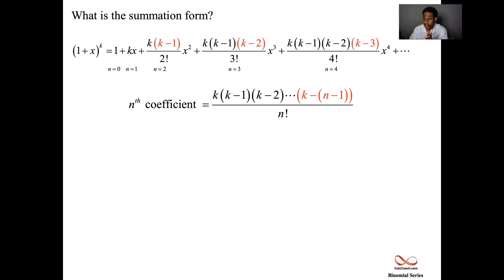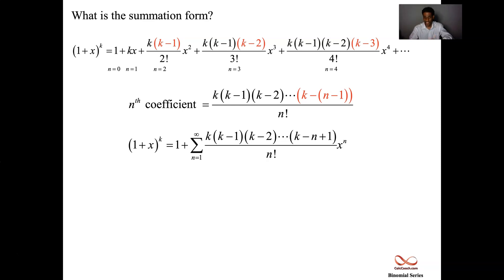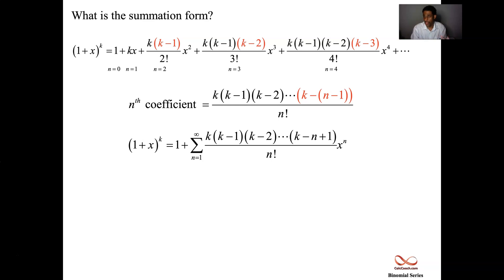That's the formula for the nth coefficient, multiplied by x to the n — we have the series in summation format. When n equals 0, the stopping term doesn't quite fit, so we take off the n=0 term and start the pattern at n=1. This is the summation form for the binomial series in the format of (1+x)^k.